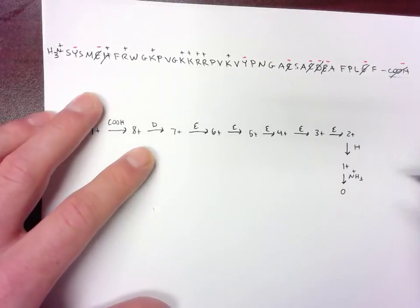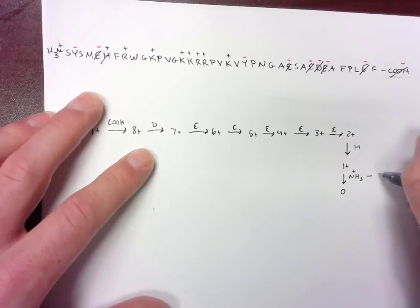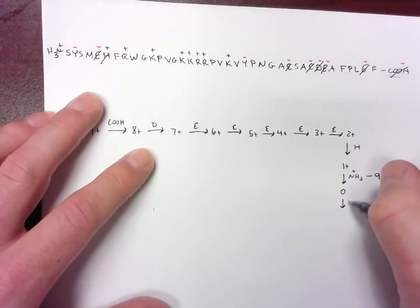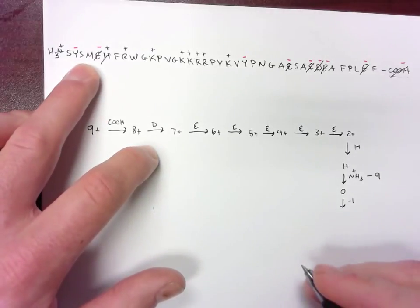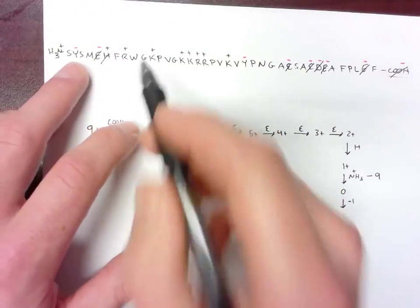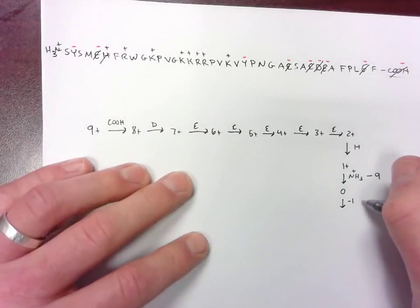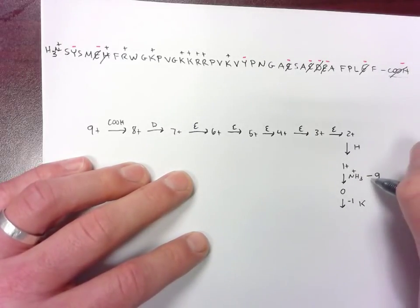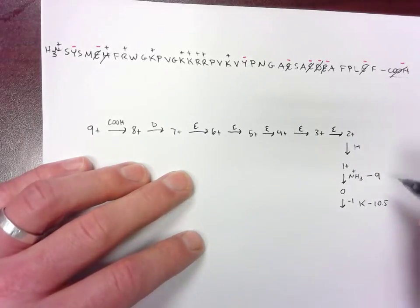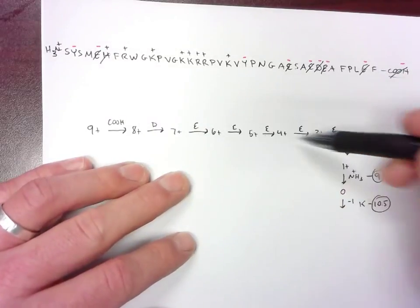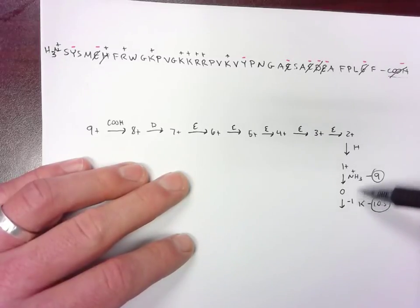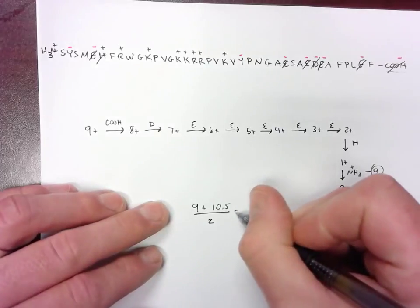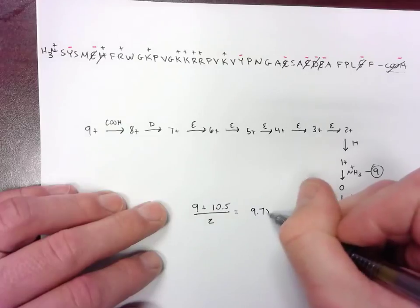The next one — or actually the one flanking zero — is going to be this amino terminus. Here's where we do need to know the numbers. The amino terminus is going to vary a little bit, but we're going to call it approximately 9. And then the next one to lose a proton is going to be the tyrosine or the lysine — they have pKa values pretty close to each other at about 10.5. So in this case we'll use lysine, with a pKa of about 10.5. So to find the pI, we take 9 plus 10.5 and divide by 2, which gives us 9.75 as our pI.